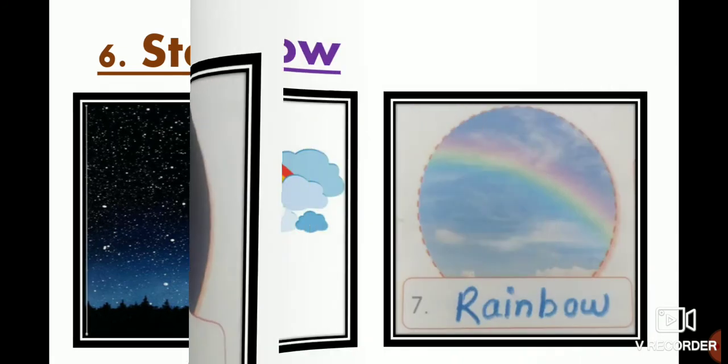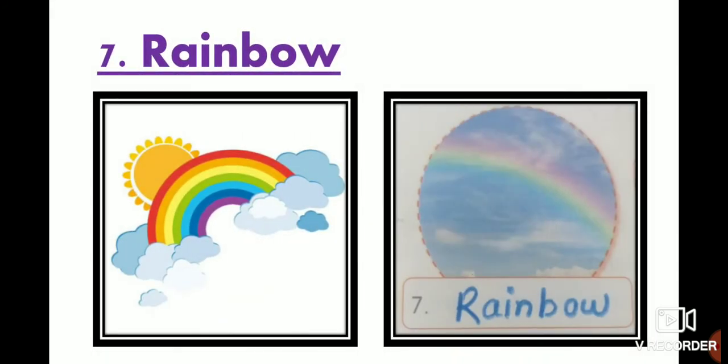Now let's see the last one. What is the seventh one? Rainbow. Indra dhanush. This has many beautiful colors, okay? So what do we call Indra dhanush in English? Rainbow. What's the spelling of rainbow? R-A-I-N-B-O-W. I'll repeat again: R-A-I-N-B-O-W. What do we call this? Rainbow.